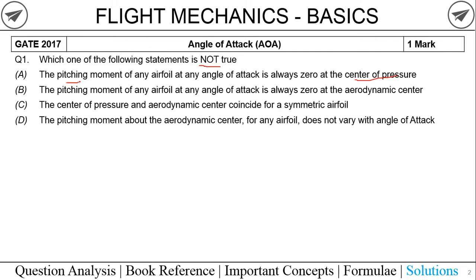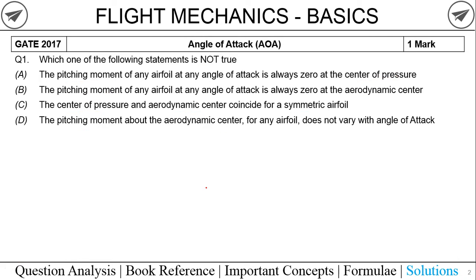The options are basically talking about pitching moment, center of pressure, and aerodynamic center. Option B states the pitching moment of any airfoil at any angle of attack is always zero at the aerodynamic center. Option C states the center of pressure and aerodynamic center coincide for a symmetric airfoil. Option D states the pitching moment about the aerodynamic center for any airfoil does not vary with angle of attack. Before answering, we need to know what center of pressure and aerodynamic center are.